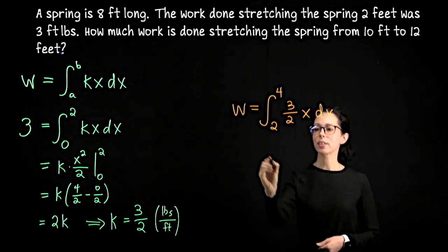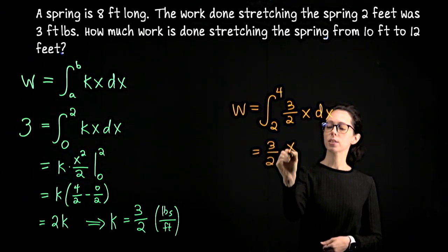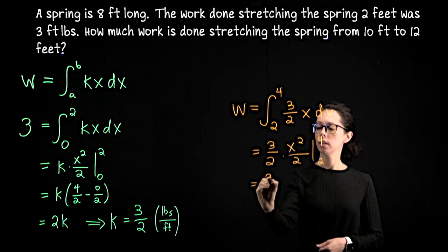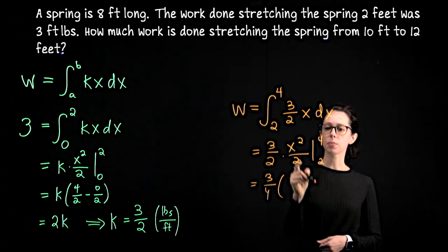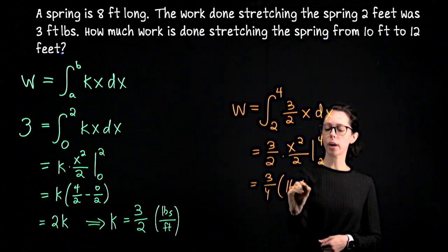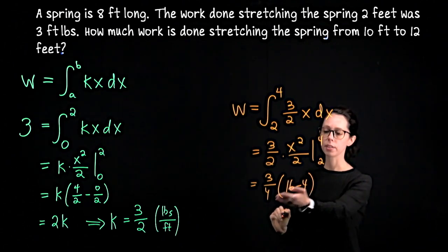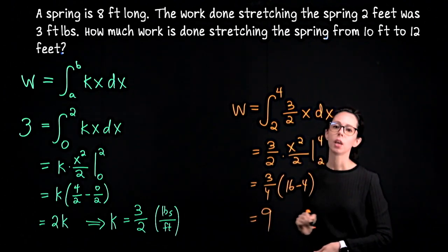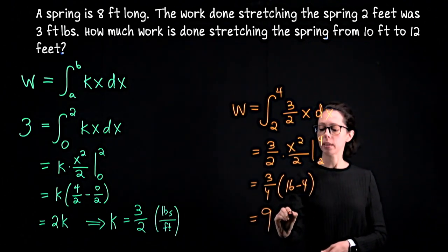So 10 to 12 is really 2 feet beyond equilibrium to 4 feet beyond equilibrium. Now we can just anti-differentiate. This is going to be 3 halves times x squared over 2. Let's plug in our bounds and we'll get 3 fourths times 16 minus 4. That's 12 divided by 4 is 3 multiplied by 3 is 9. We're working in American units, so it's going to be 9 foot pounds.